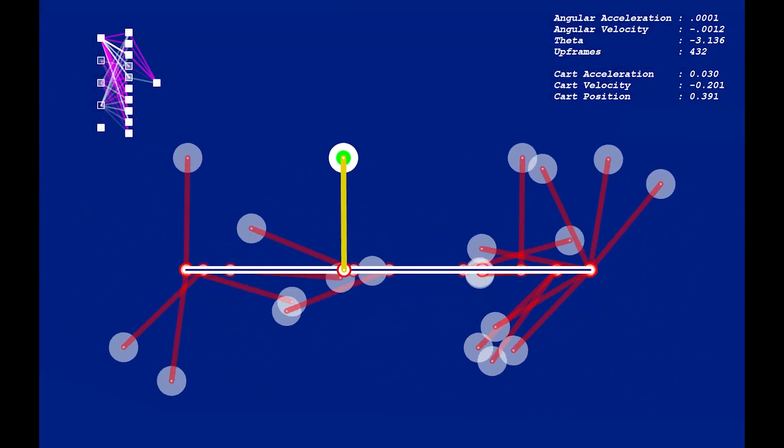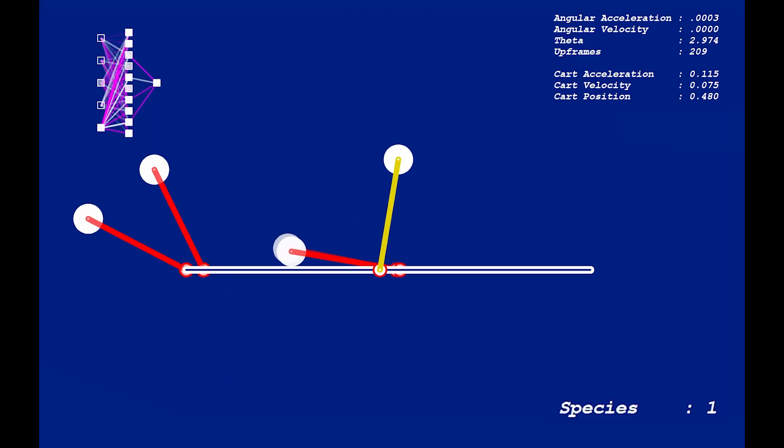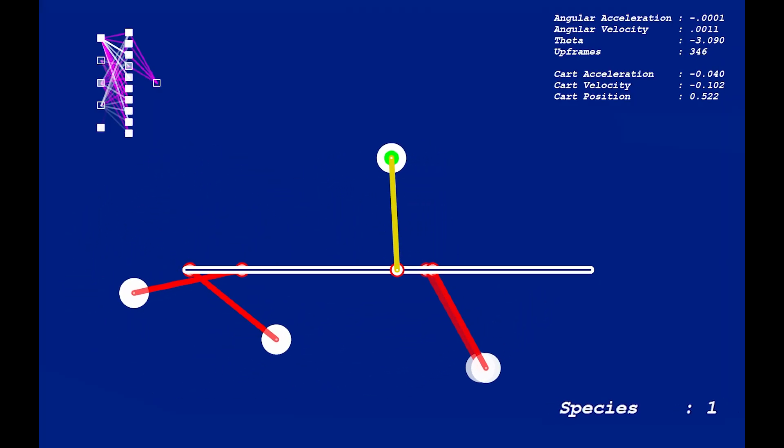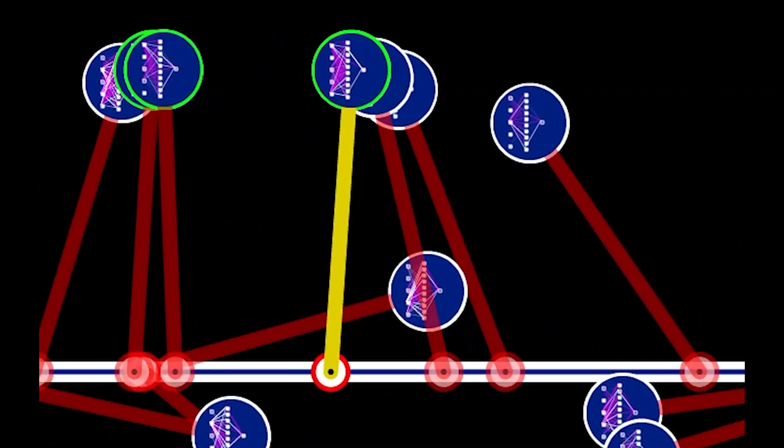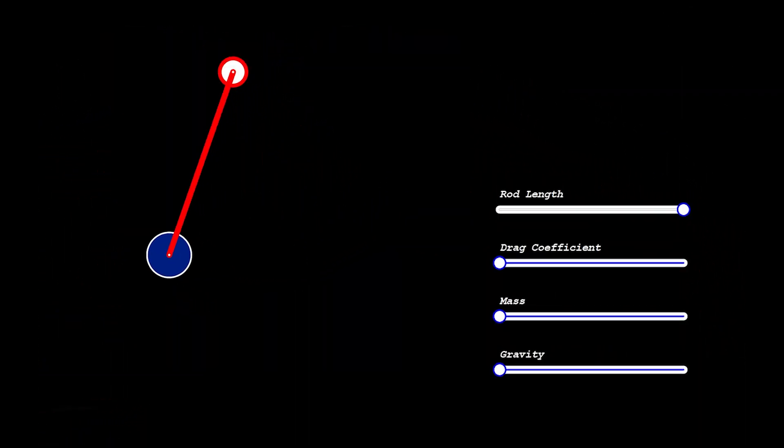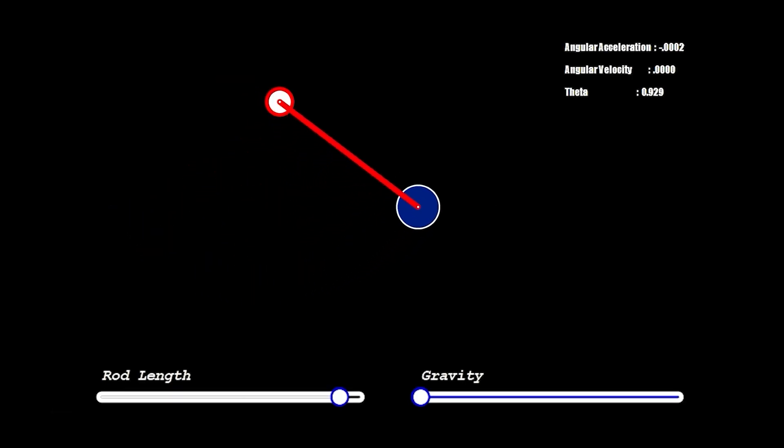I also have the option to display all networks, a variable subset, a particular species or just the current fittest network. And I added sliders to the mix to play around with variations on gravity, drag coefficient, rod length and mass. Mass isn't used here but it's a component in the double pendulum setup.